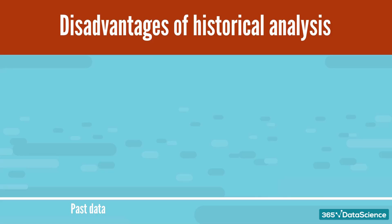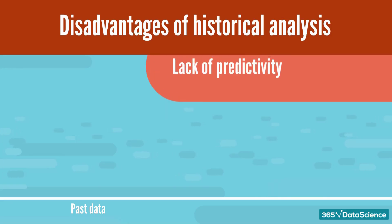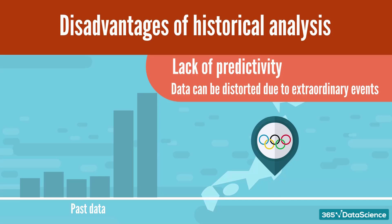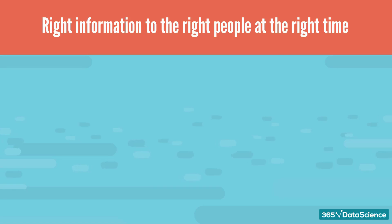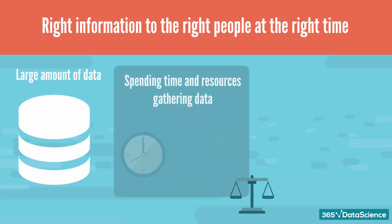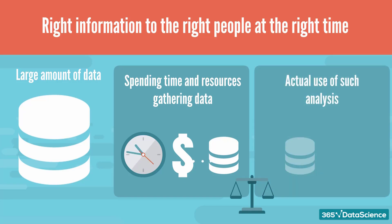The disadvantages of historical analysis are the lack of predictability. Bear in mind that past data is not necessarily a good indicator of future performance. Data can be distorted due to extraordinary events — things that are one-off, such as a merger between two competitors, or an event like the Olympic Games taking place in one of our countries of operation, can have a strong impact on numbers and provide an unrepresentative picture. Ultimately, delivering the right information to the right people at the right time is not an easy task. A common challenge is to manage the trade-off between spending time and resources gathering and transferring data, and the actual use of such analysis.